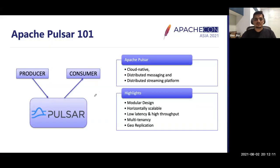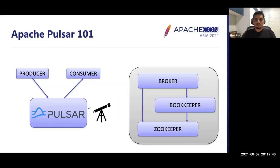Apache Pulsar is a cloud-native, completely distributed messaging and streaming platform with a modular design allowing independent horizontal scaling of storage and compute. It supports low latency, high throughput, multi-tenancy, and geo-replication out of the box using a single global Zookeeper metadata store. Internally, Pulsar has stateless broker nodes for computation — scalable independently — while storage is done via Bookkeeper's Ledger APIs. Bookkeeper uses Zookeeper for metadata, and the same Zookeeper cluster coordinates broker nodes.